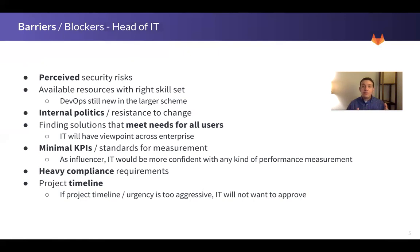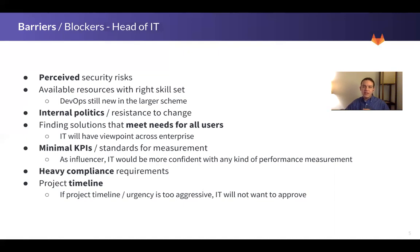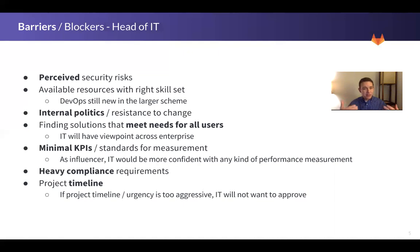Like many personas, heavy compliance requirements can be a blocker. In large enterprise organizations, the larger the organization is, the more internal compliance standards they'll have to mitigate risk. In highly regulated industries — healthcare, finance, or any highly regulated industry — in order to move forward in that organization, you have to comply with all regulatory standards, which can slow or block adoption. Finally, if the project timeline is too aggressive, the head of IT is not going to want to approve or support it. They want to move at a measured pace, mitigate risk, maintain stability, and know they can staff and support it.